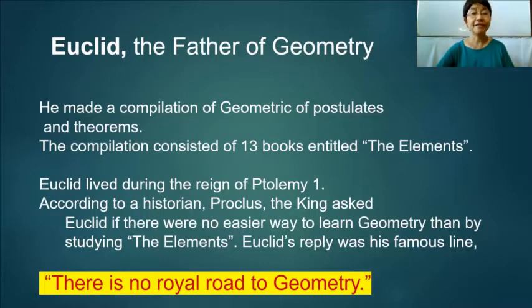Euclid lived during the reign of King Ptolemy I. According to a historian Proclus, the king asked Euclid if there were no easier way to learn geometry than by studying the elements. And Euclid's reply was his famous line, there is no royal road to geometry.